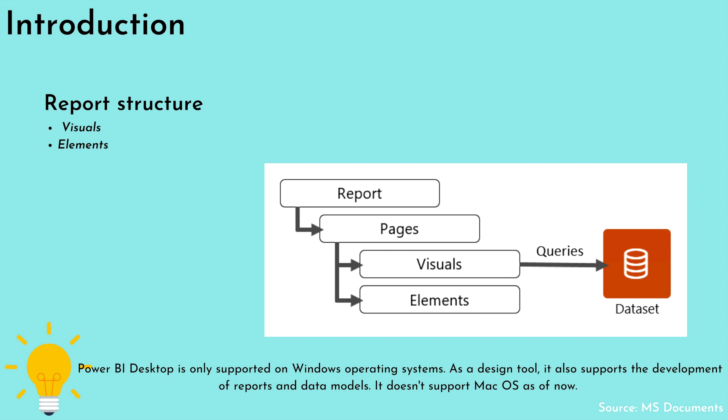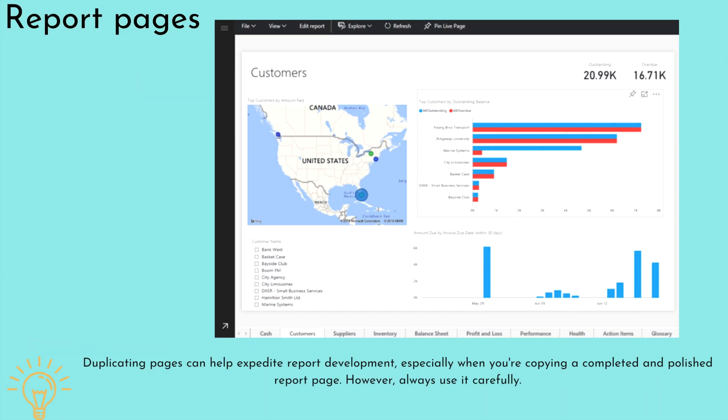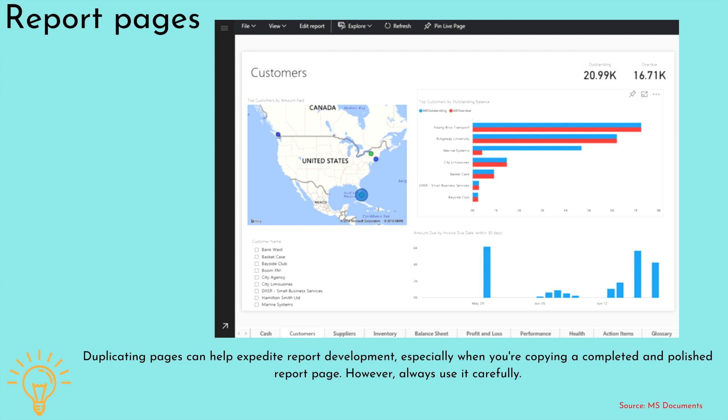Next we are going to talk about report pages. Similar to Microsoft Excel worksheets, you can add, rename, resequence, hide, duplicate, or delete Power BI report pages. Report consumers navigate to visible pages by selecting a page tab at the bottom of the screen. When you have published your reports on the Power BI service, you can also see all report pages on the right-hand side. You can also design your report to include all page names within the report page layout.